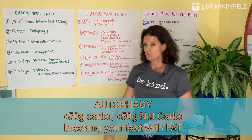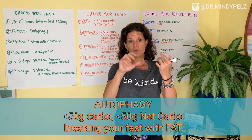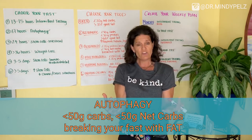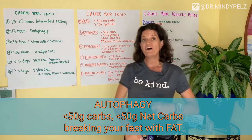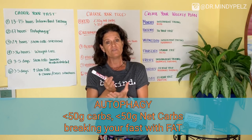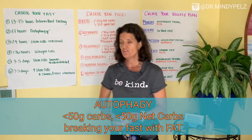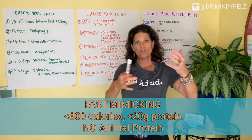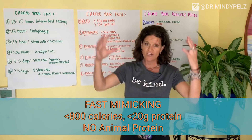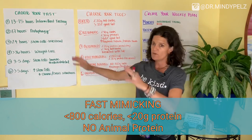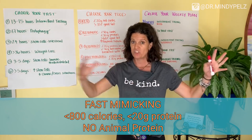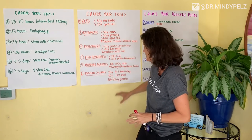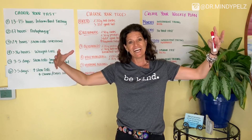The third eating style is autophagy eating: keeping protein under 20 grams, net carbs around 50 grams, and breaking your fast with fat — there's a very specific way to break your fast on autophagy days. The fourth is fast mimicking, where you keep calories under 800, protein under 20 grams, and there's no animal protein.